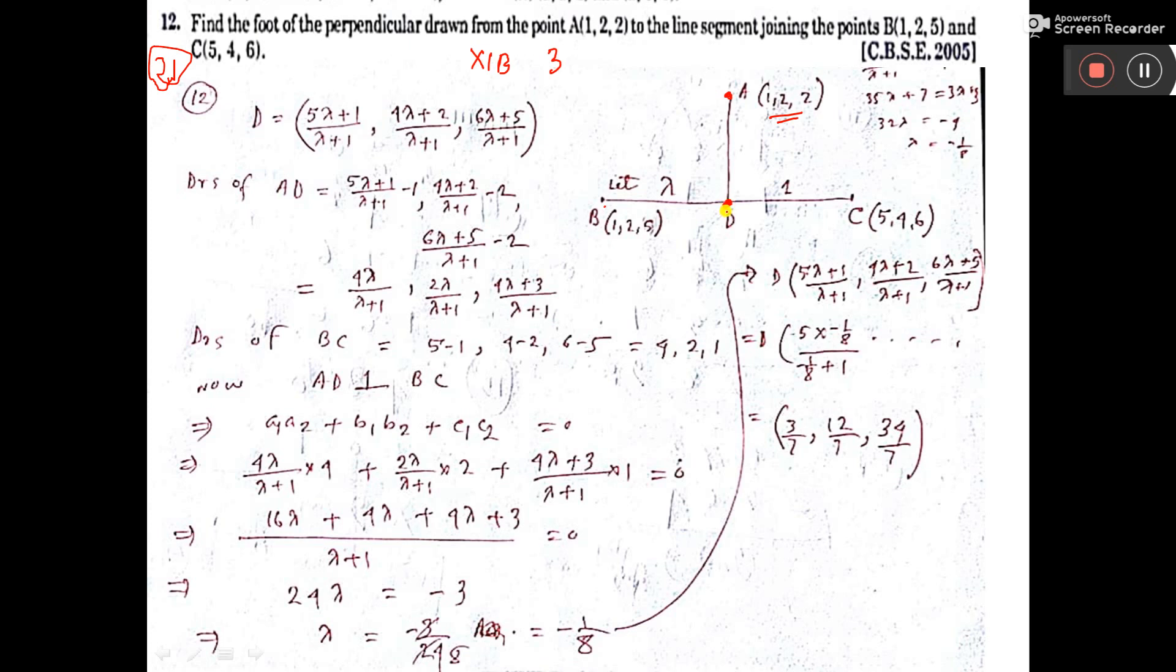So this D we have to calculate. Now see how I have done this B point and C point written here. Now this ratio I have considered lambda is to 1. This ratio, BD is to DC I have considered lambda is to 1.